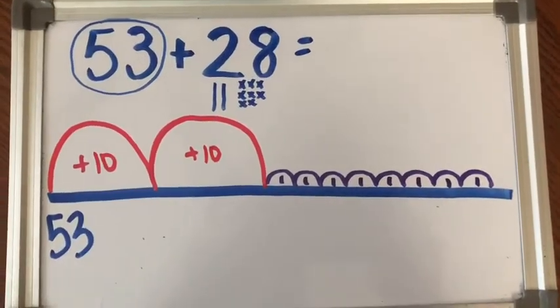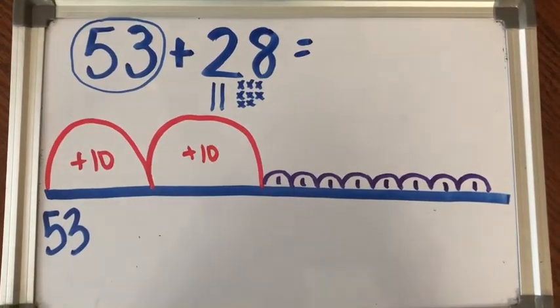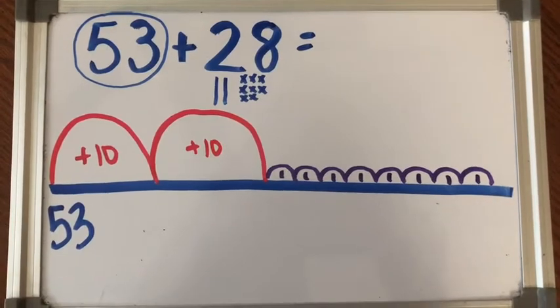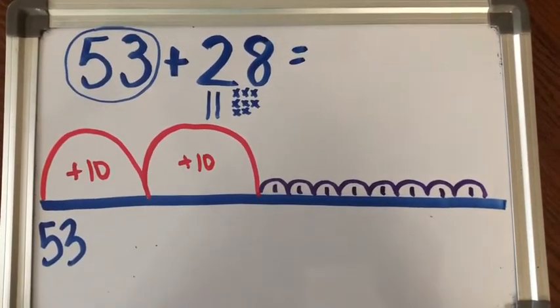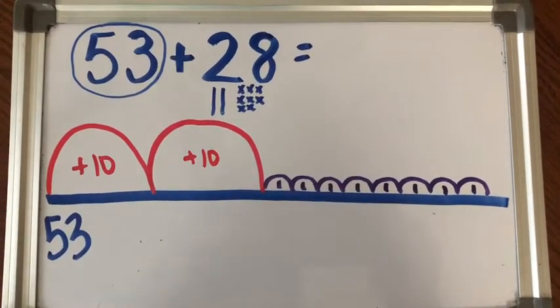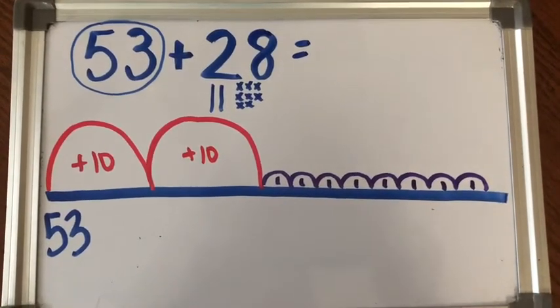So I set up my problem. My 53 goes under my line since I circled 53. That's where I'm starting. I have two jumps of 10 in red that match my two rods under the 2 in 28. And then I have eight hops of 1 that match my 8 cubes.